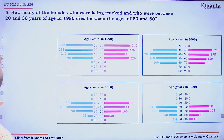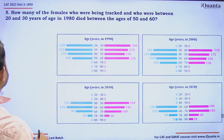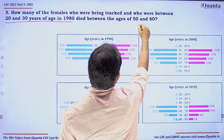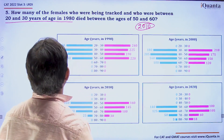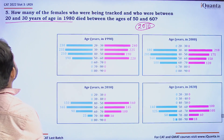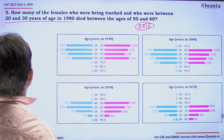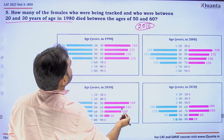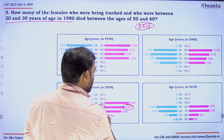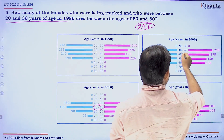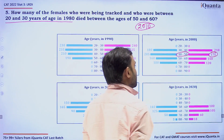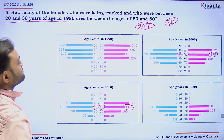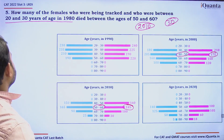Question 5: How many females who were being tracked and who were between 20 and 30 years of age in 1980 died between the ages of 50 and 60? Dying aged 50–60 means they died in the period around 2010. In the 2010 figure, females aged 50–60 = 145. Ten years earlier in 2000, those same women would have been 40–50, and that value is 175. The difference is 175 − 145 = 30. So exactly 30 females died when they were aged 50–60.